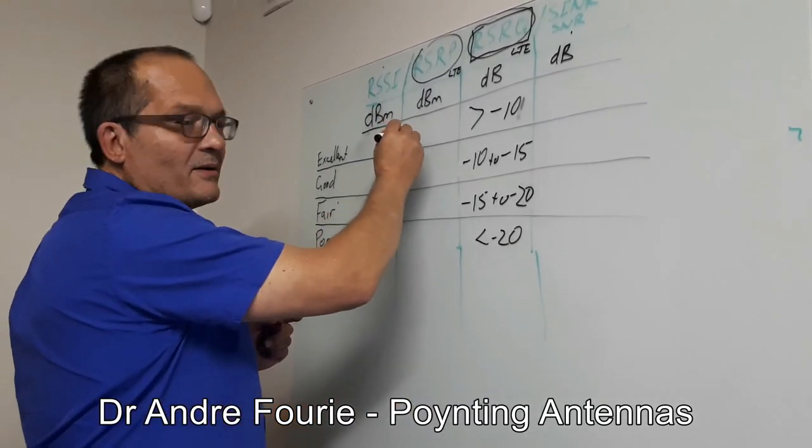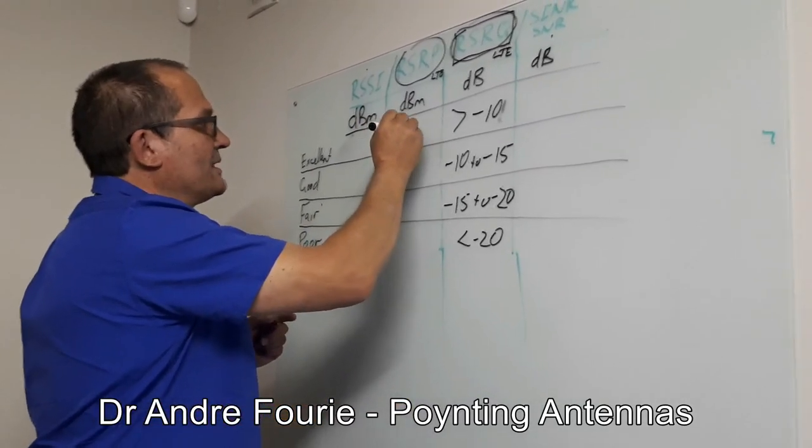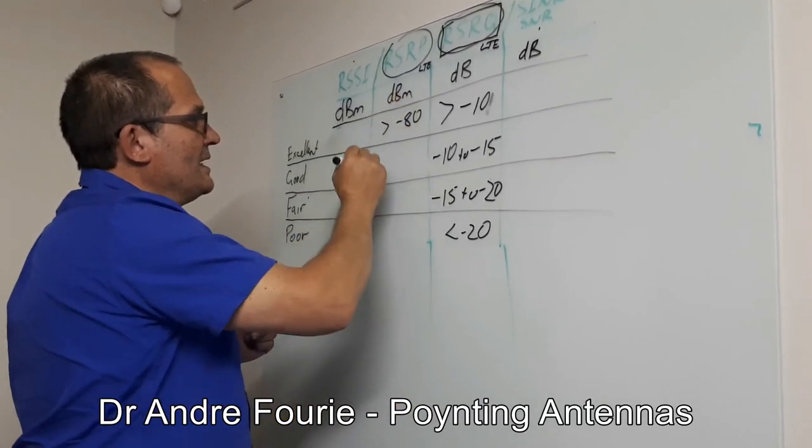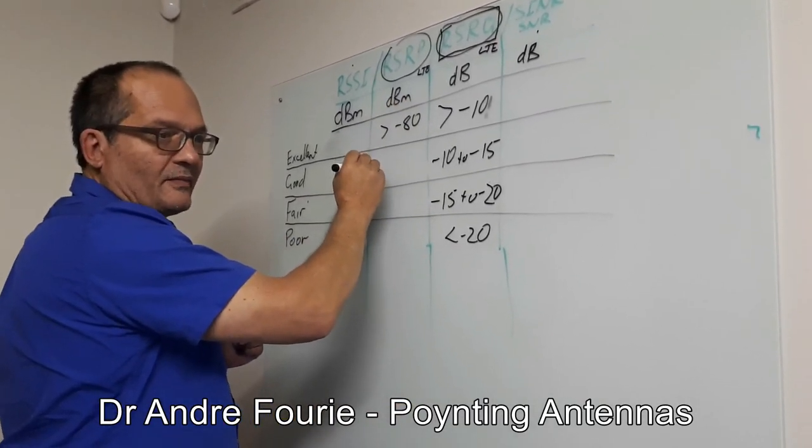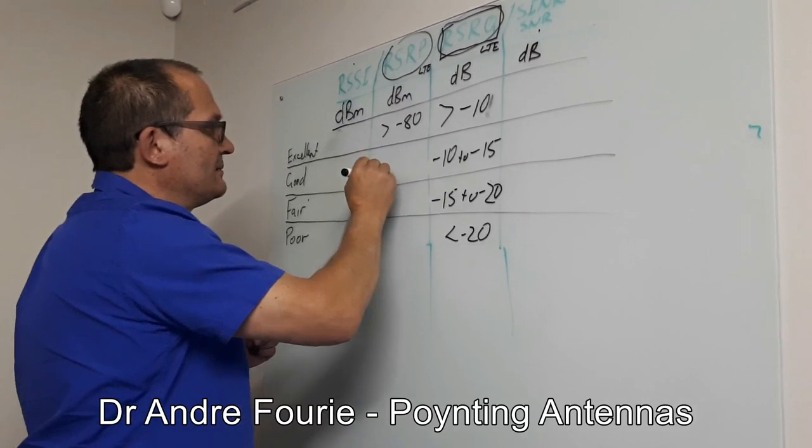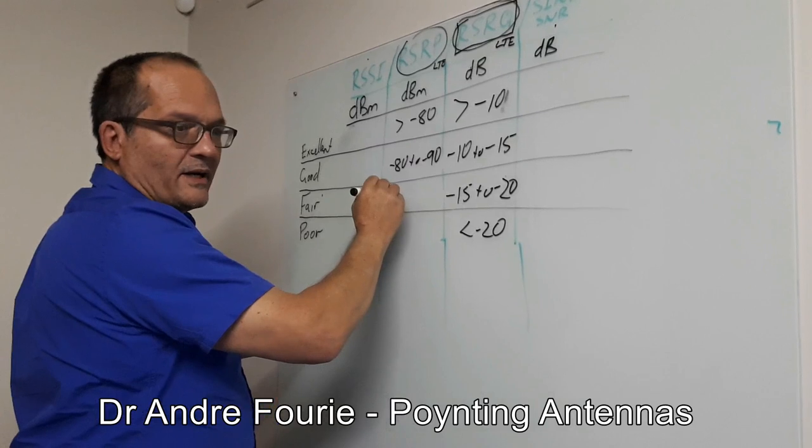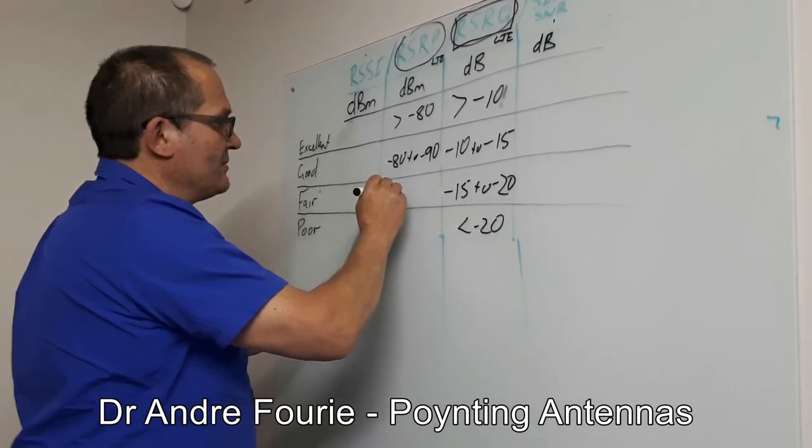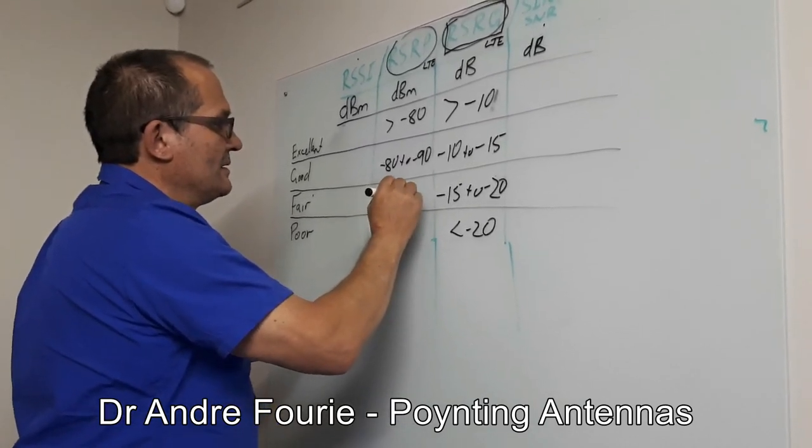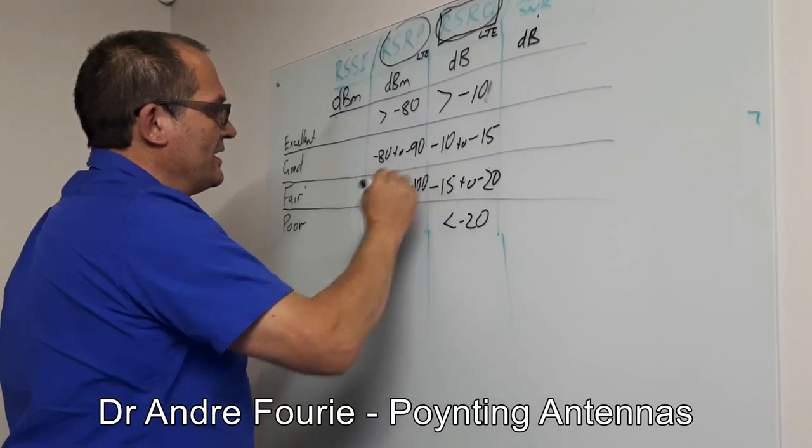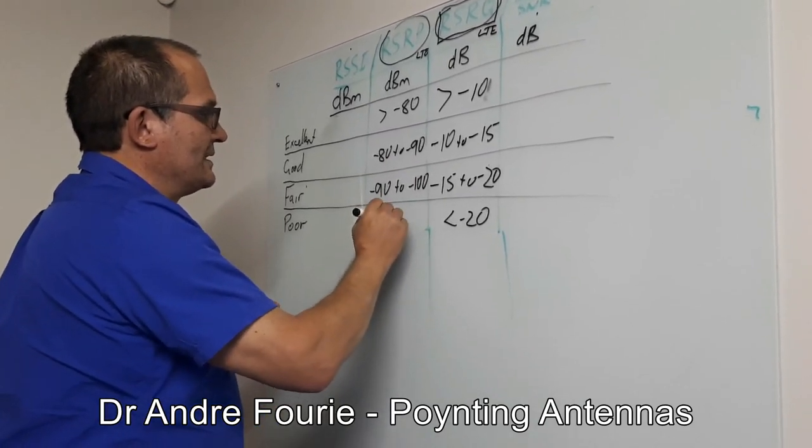In terms of the actual receive power, this is roughly bigger than minus 80. This is roughly from minus 80 to minus 90. And this is roughly from minus 90 to minus 100. And of course, that is then less than minus 100.